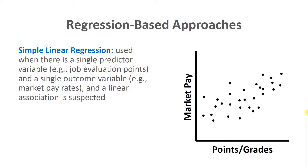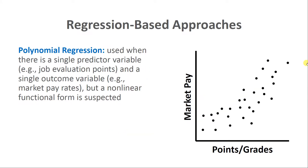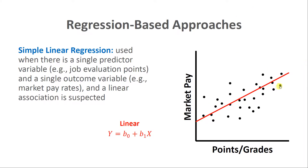Looking at a scatter plot where we try to understand the relationship between job evaluation points or job grades and market pay rates, if the data suggest a linear association — where a line would best fit the data — then simple linear regression would be appropriate. Simple linear regression is used when there is a single predictor variable such as job evaluation points, a single outcome variable such as market pay rates, and when you suspect a linear association between these two variables.